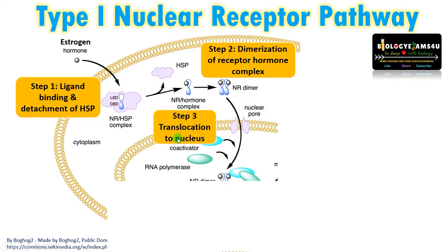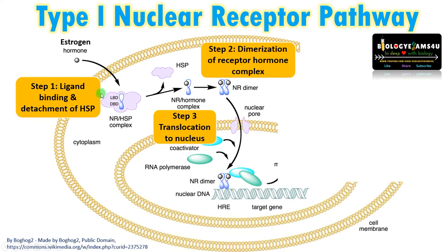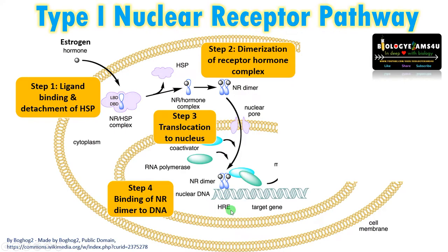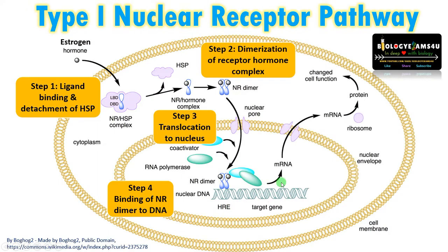The receptor-hormone complex is then translocated to the nucleus through the nuclear pore. It binds to the hormone response element (HRE) — a specific DNA sequence. In the case of the estrogen receptor, this is called the estrogen response element. Upon binding, coactivators and RNA polymerase are recruited for transcription, leading to mRNA formation and finally protein synthesis that changes cellular function — often involving cell growth, division, and differentiation.